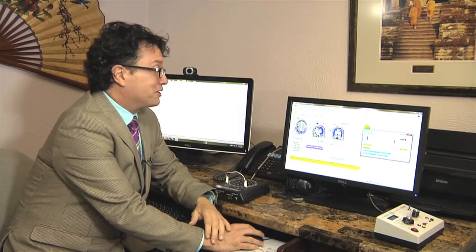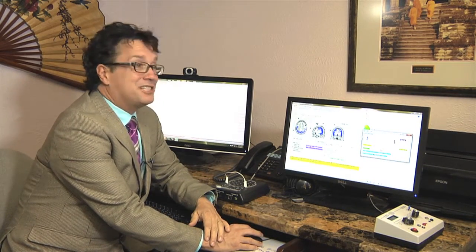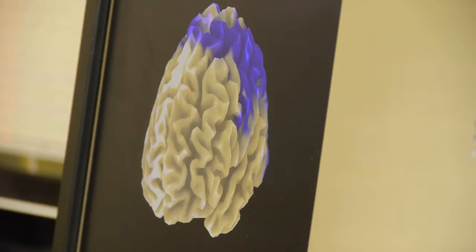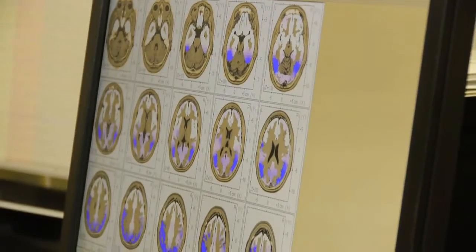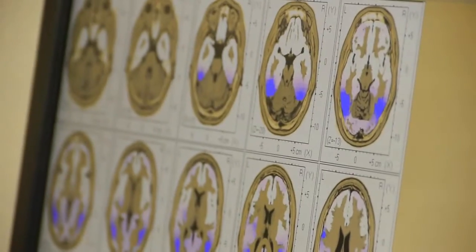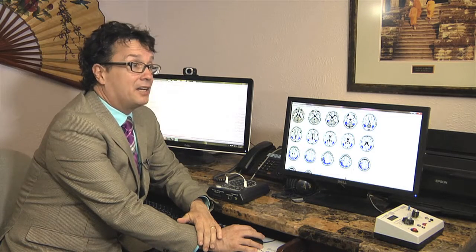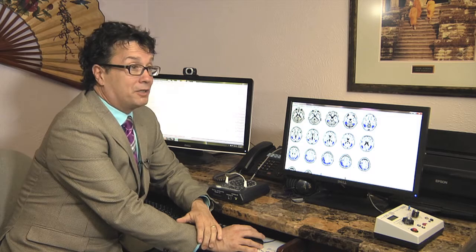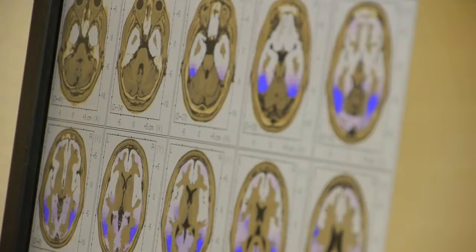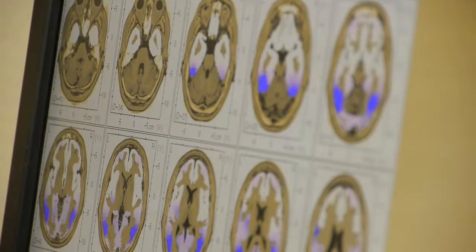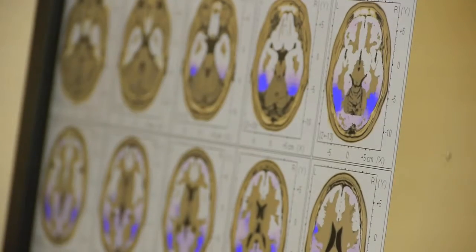Here we have a different software system set up where we can actually see different slices of the brain and different frequencies. Here we have the delta and we can actually slice it and we can see different parts of the brain and where we have deficiency in delta in the back of her brain. This person actually had a blunt trauma to the back of her head. So we can see a lot of different slowing in the delta fields in the back of her brain.